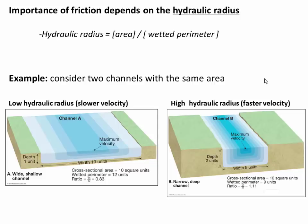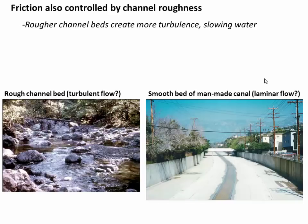Hydraulic radius is very analogous to a pipe — a bigger pipe with a bigger radius lets you flush water through it faster. Now, the other factor that determines the importance of friction is the channel roughness. It matters a lot what the edges of the channel are made of. Rougher channel beds create a lot more turbulent flow and the water goes slower for a given hydraulic radius. In contrast, things like concrete canals are very smooth and the water will go very fast. So channel roughness matters a lot in determining friction.